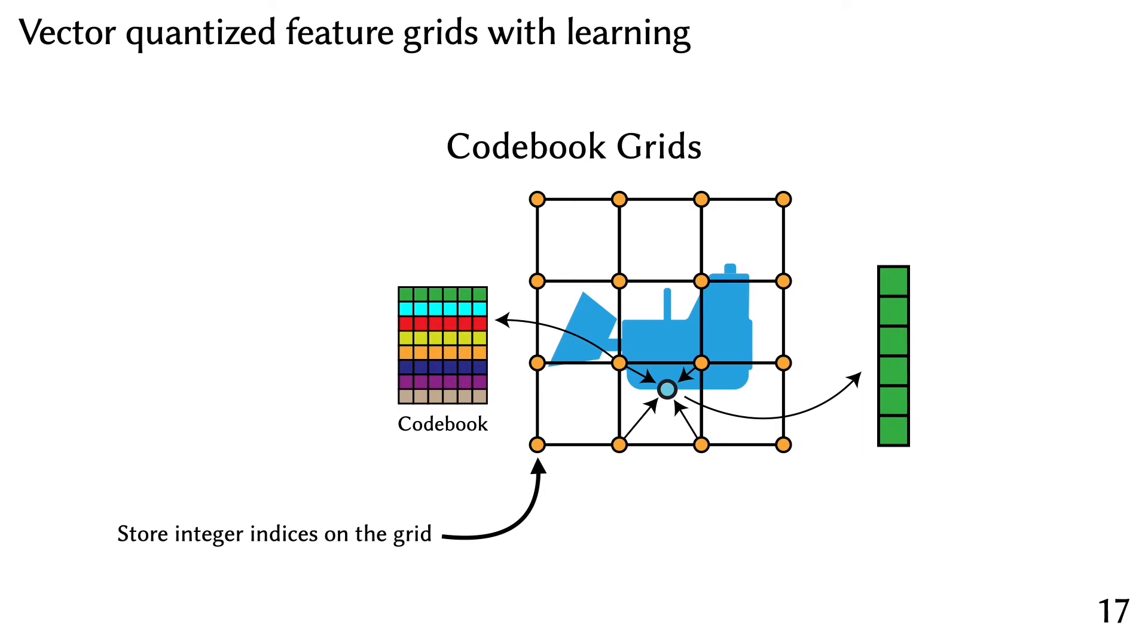In our work, we instead opt to store integer indices on a grid, which are used to index into the codebook. By learning the integers in the optimization process, we can learn to optimally allocate the finite-sized codebook entries. But there is a problem here, because the indexing operation is non-differentiable, so you can't learn this in a differentiable learning setup.